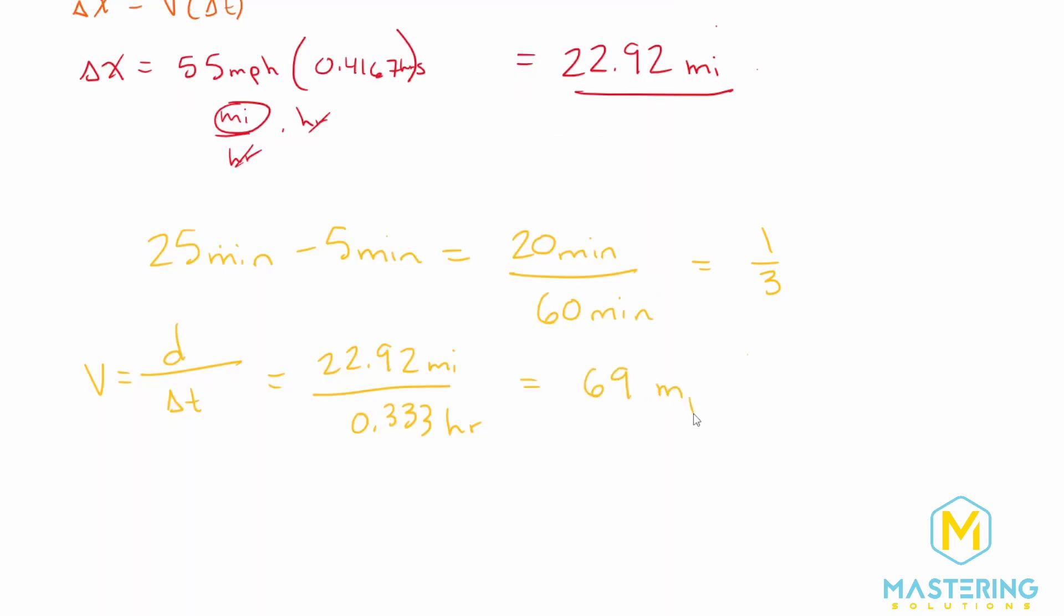We'll just round that to 69, so he has to go 69 miles per hour. If you think about his situation, he has to go 69, but normally he does 55, so he has to go 14 miles per hour faster. But the answer that Mastering Physics is asking for is 69 miles per hour to make up those five minutes.